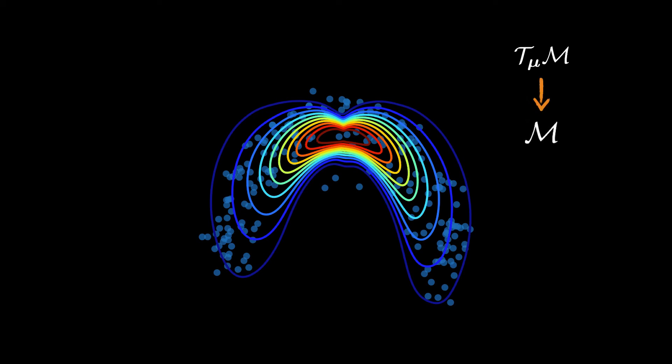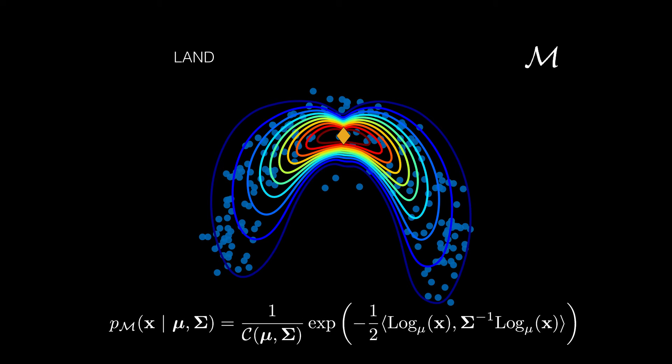Then, simply by mapping this density back on the manifold, we get the land. This is the maximum entropy distribution under the Riemannian metric.